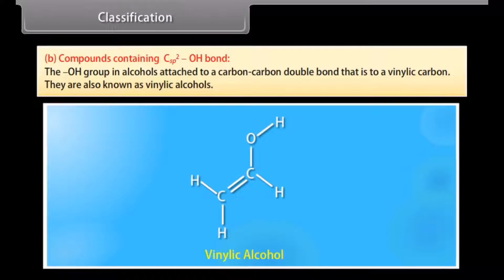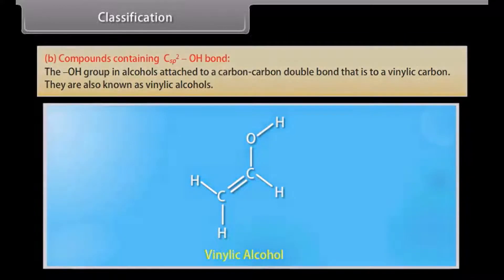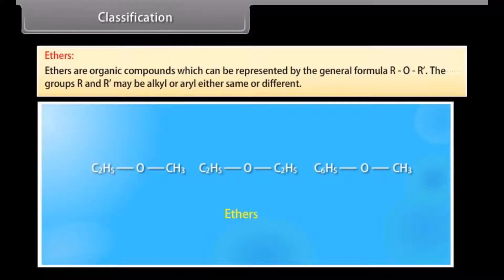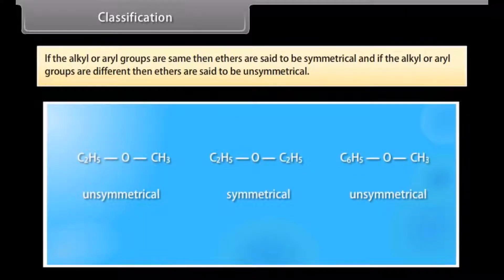Compounds containing sp2 hybridized carbon bonded with hydroxyl group — the hydroxyl group is attached to a carbon-carbon double bond, i.e., to a vinylic carbon. These are known as vinylic alcohols. Ethers are organic compounds represented by the general formula R-O-R'. The groups R and R' may be alkyl or aryl, either same or different. If the alkyl or aryl groups are the same, the ethers are said to be symmetrical.